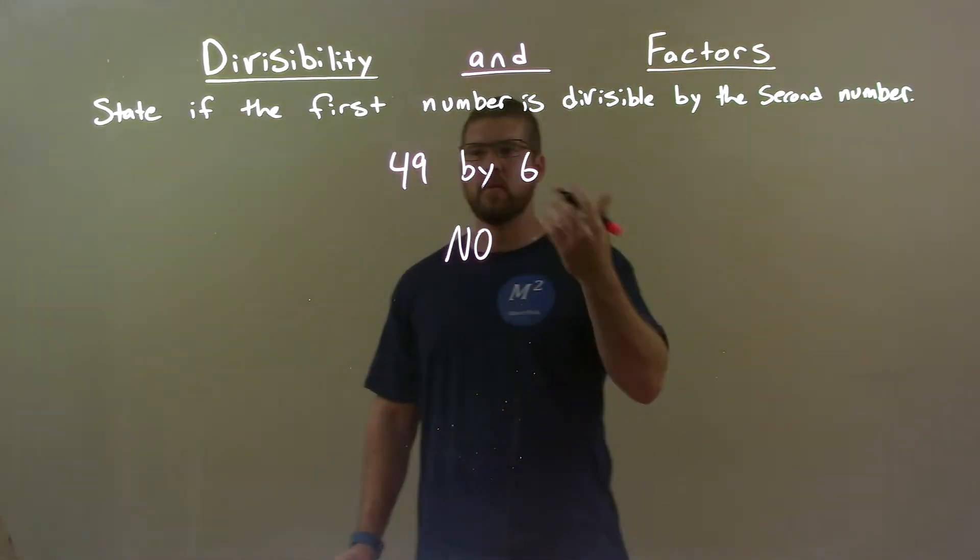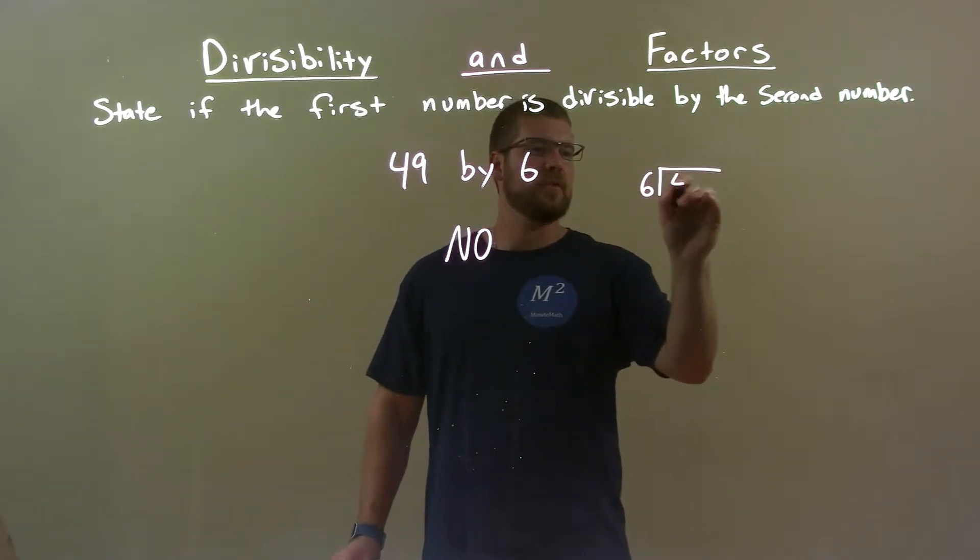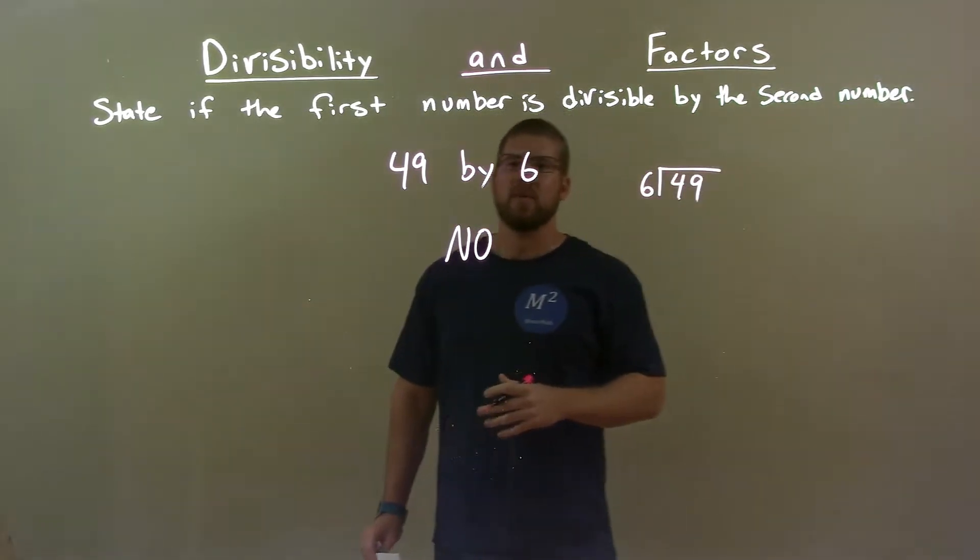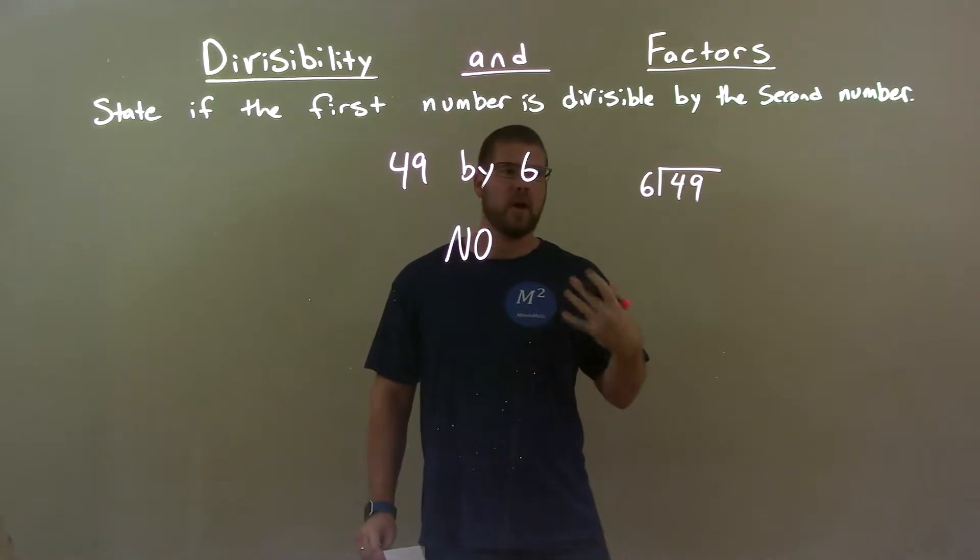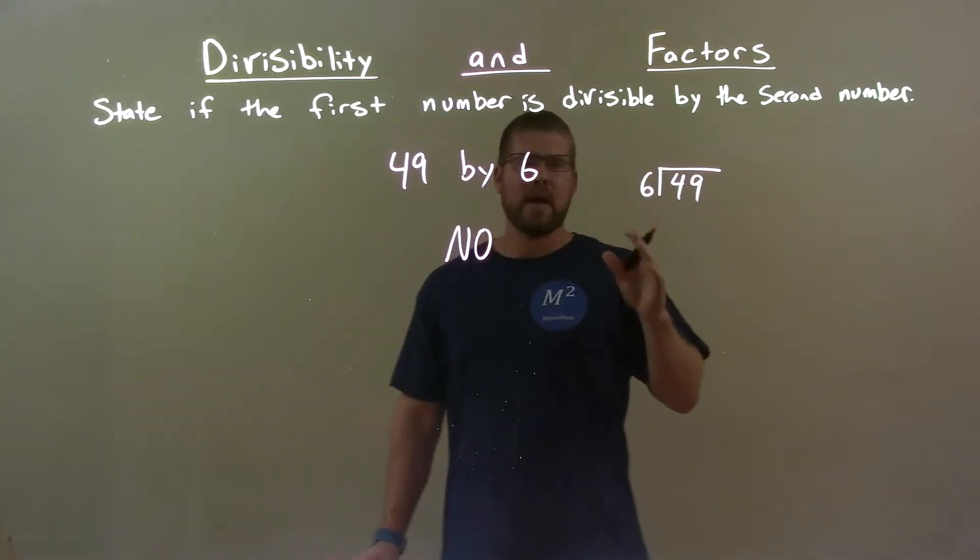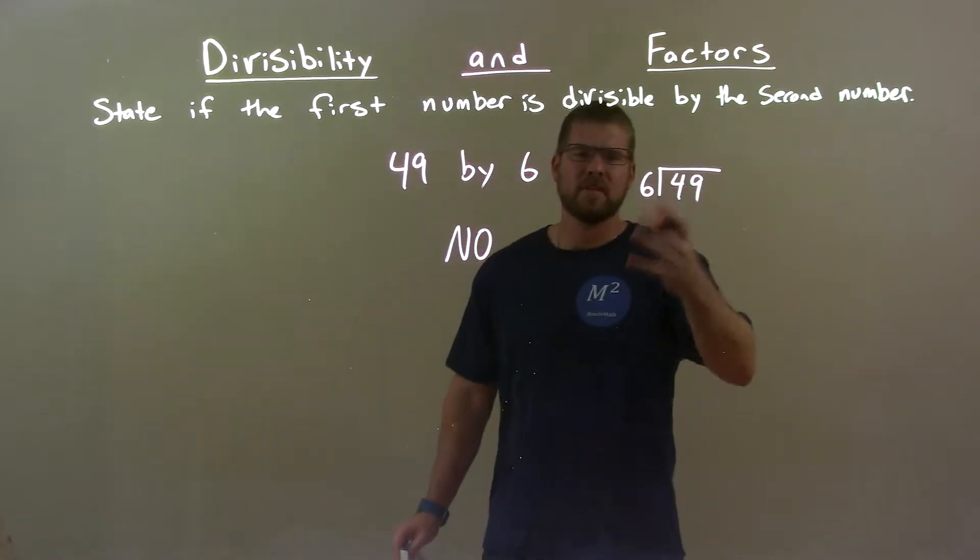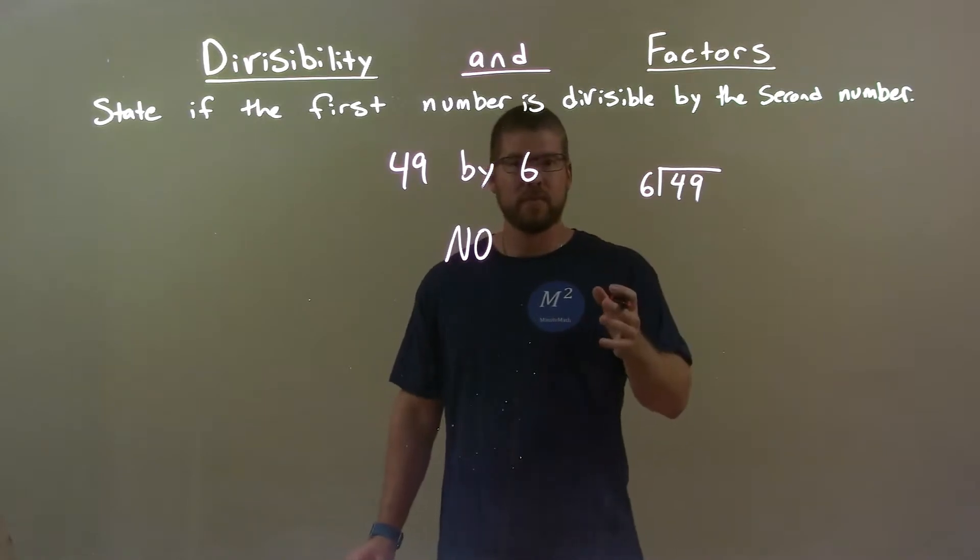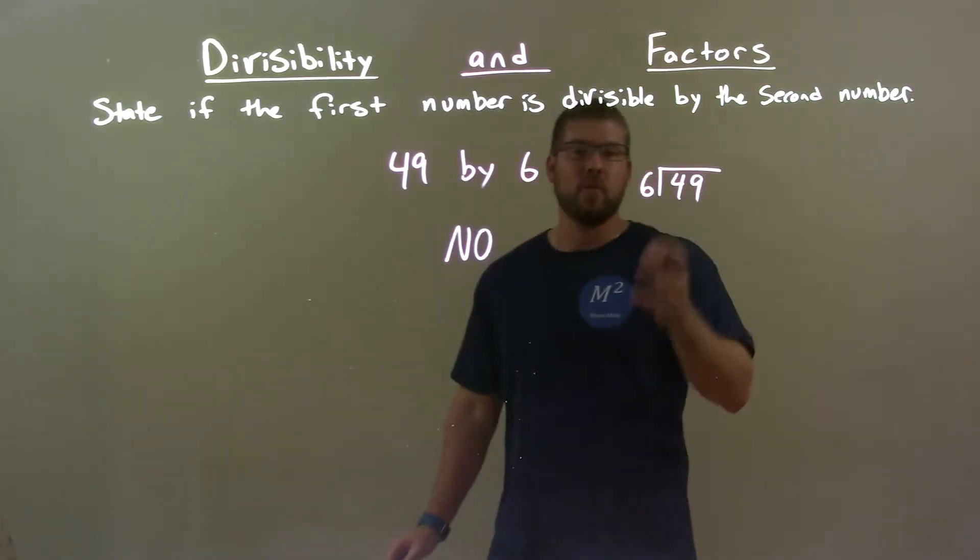So, we can see that with long division here, 6 goes into 49. Well, does it go in evenly? What's going on here? We know that 6, what number does 6 go into 40 something close? So, 7 is 42, and 8 would be 48.